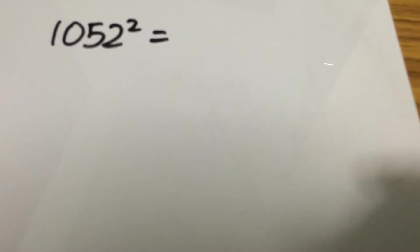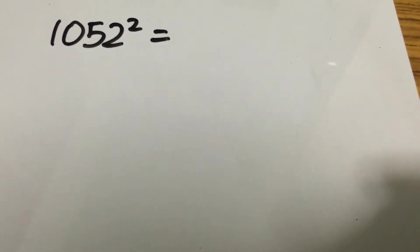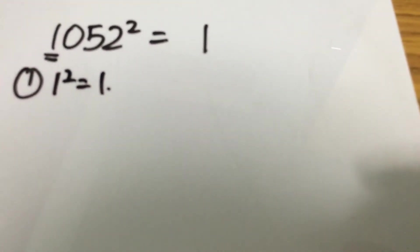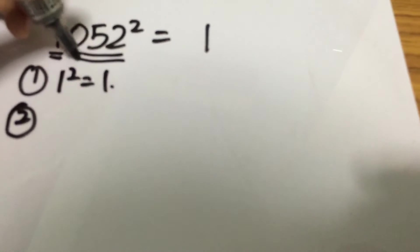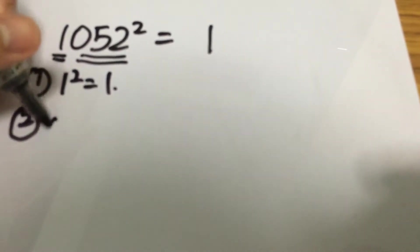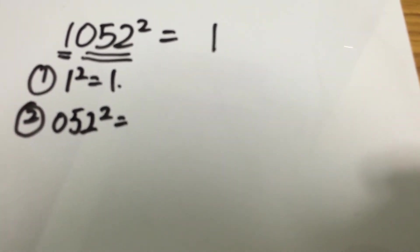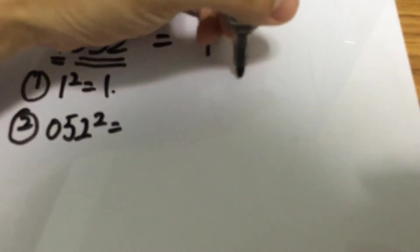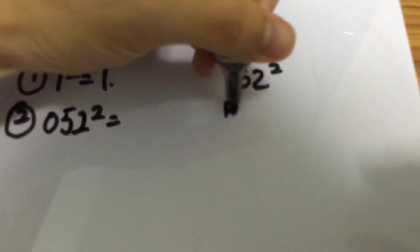The next example is to solve 1052 squared. The first thing you need to do is square the beginning value, which is 1. So 1 squared equals 1 — that is the beginning value. The next step is to square the last three digits, which is 052. So we need to square 52. Now, 52 is very close to 50, so we set 50 as the base.